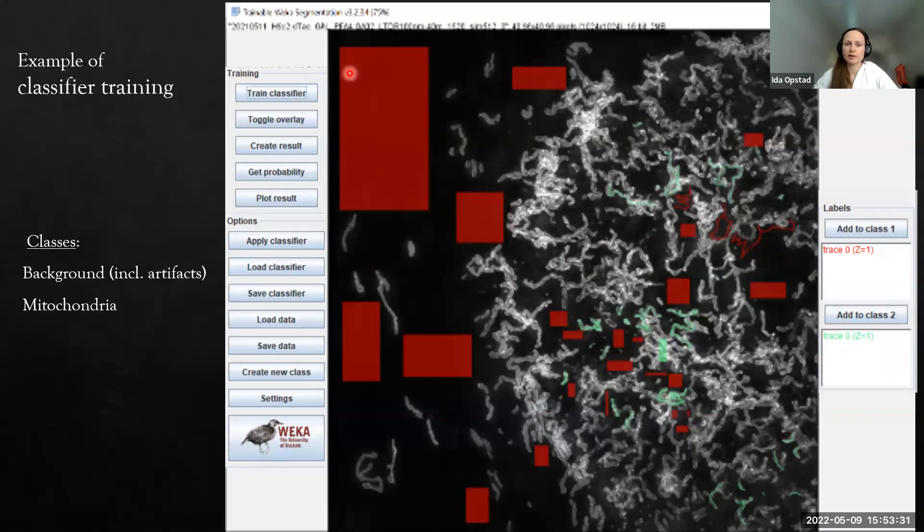This is an example of how the interface looked like and how I trained my classifier. There are two classes: dark red for background and green for the mitochondria I want to classify. To make sure all these artifacts are recognized as background, I put a lot of red pixels in this class to make sure all these artifacts here and between those regions are properly trained in that class.